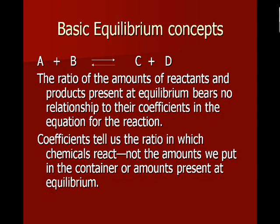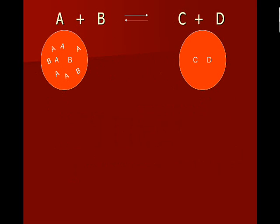If we have this system where we have A and B reacting to produce C and D, and we start with mostly A and B and a little bit of C and D, right here at the beginning, the forward rate—the reaction of A and B turning into C and D—is fairly fast compared to the reverse rate, because there's not very much C and D that can turn into A and B.